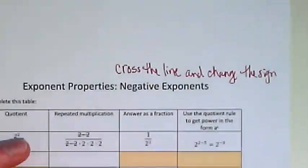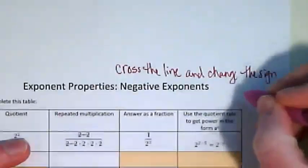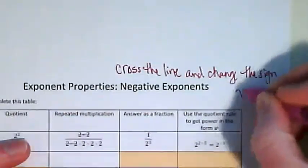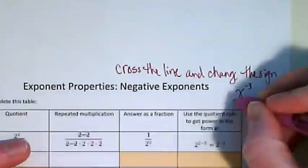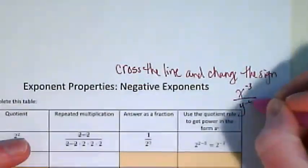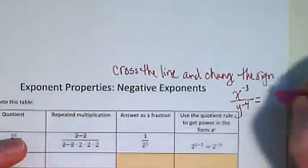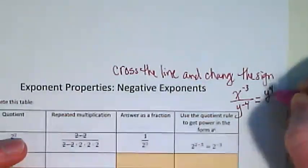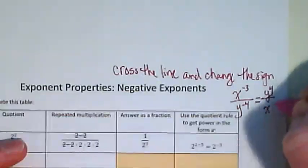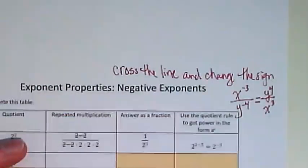So that's what it looks like when we do negative exponents. So quite simply, if I had x to the negative 3 over y to the negative 4, I want to have positive exponents. So I would change this to be y to the fourth and x to the third. Cross the line and change the sign.